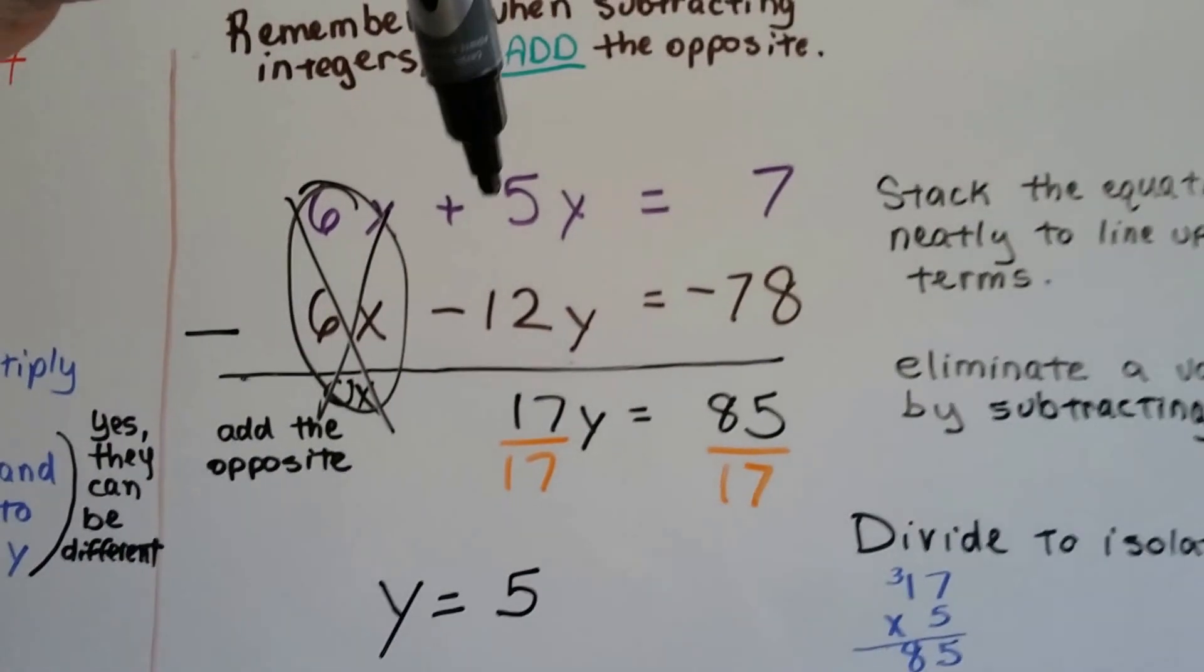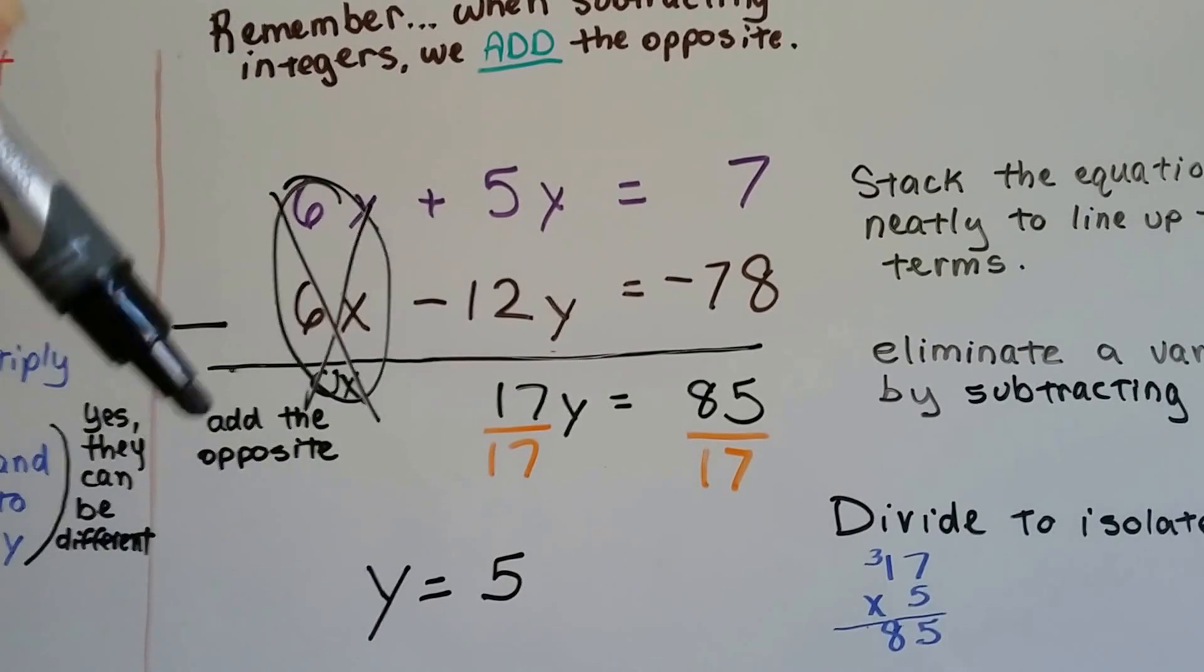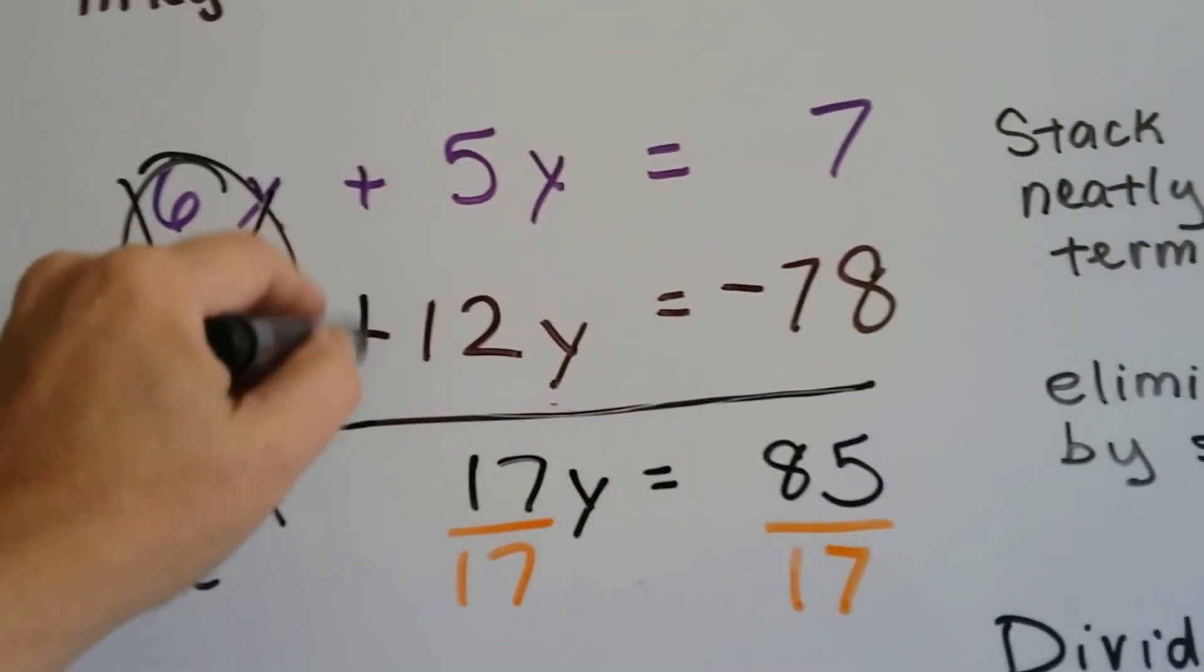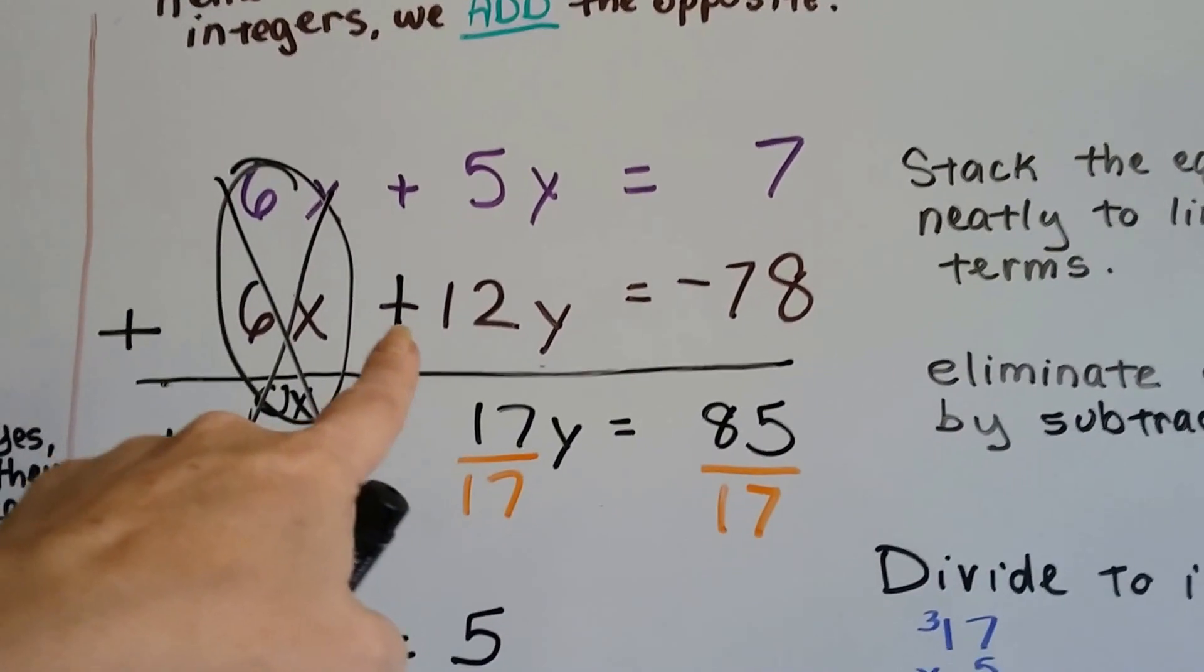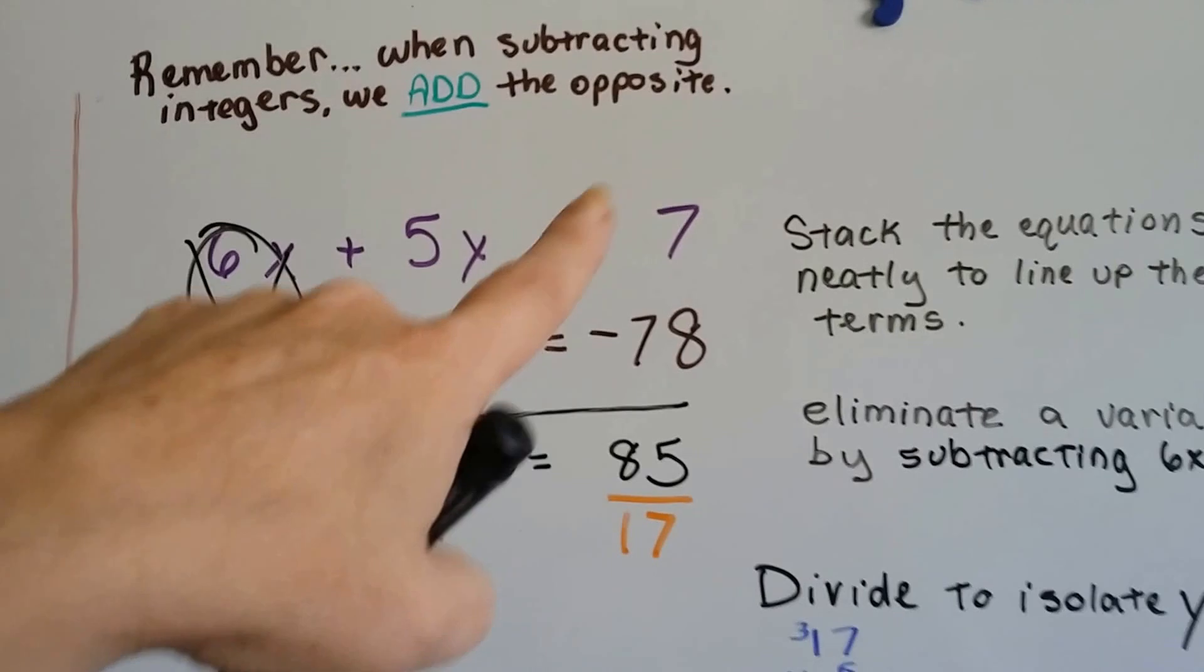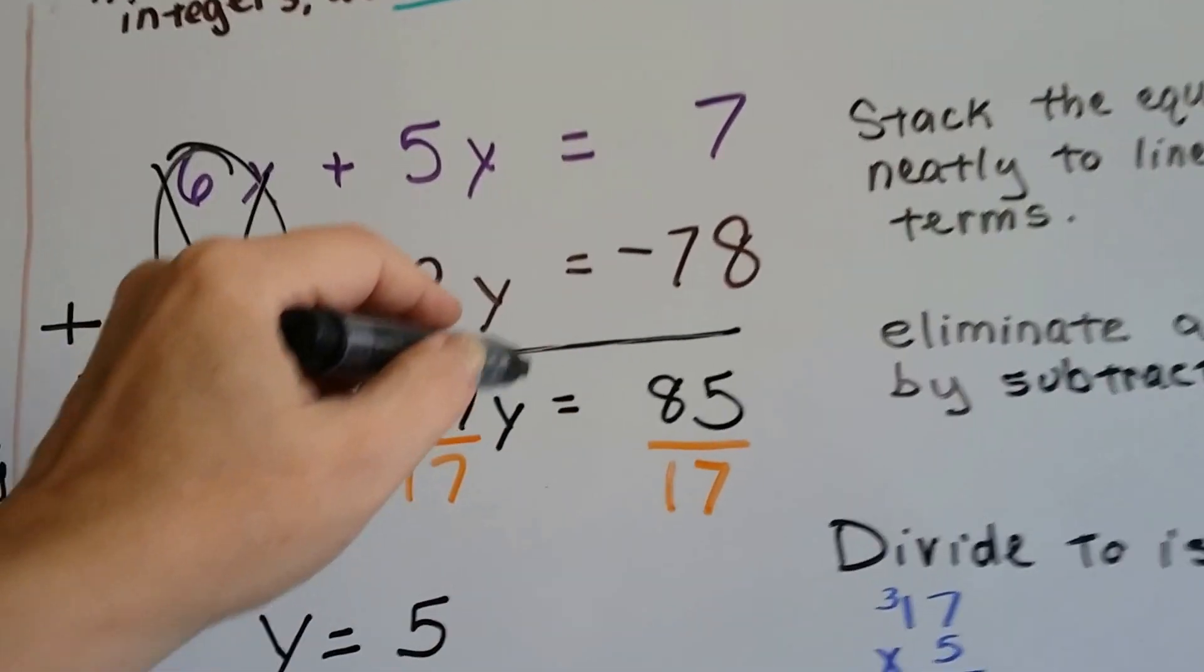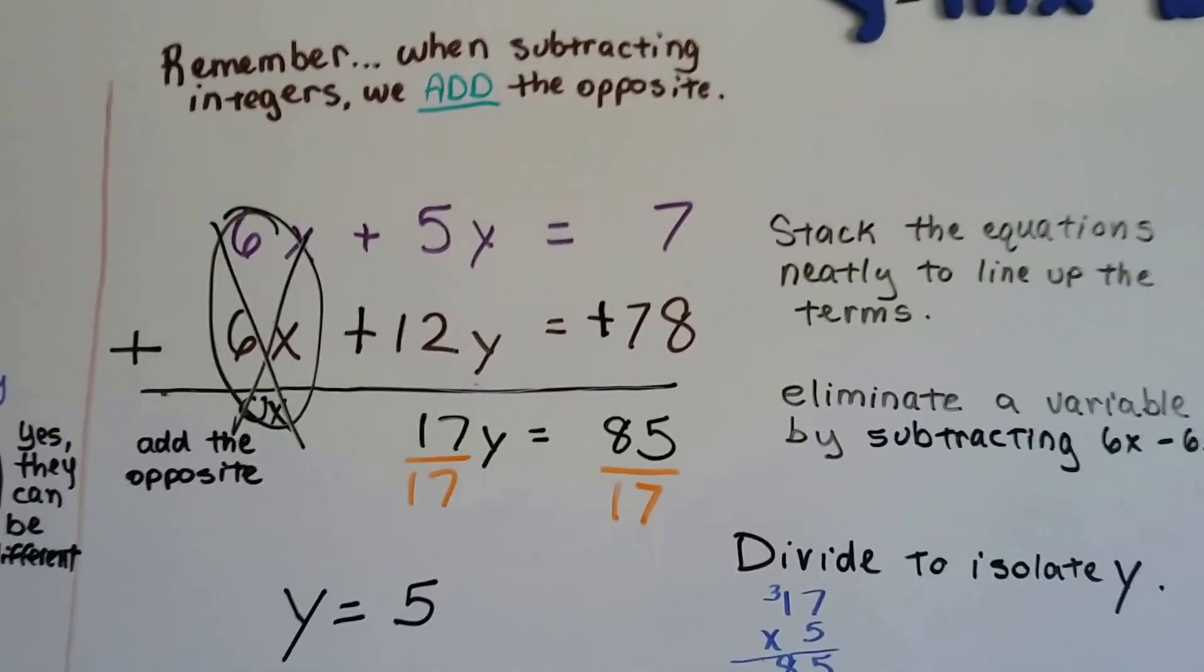And we've got a positive 5 taking away a negative 12y. So we're going to add the opposite. So instead of subtracting negative 12, we're going to add a positive 12. We added the opposite. So now we've got a 17y. And we've got a positive 7 take away a negative 78. So we're going to add the opposite. So now it's an addition. And this is a positive 78. So that gives us 85.